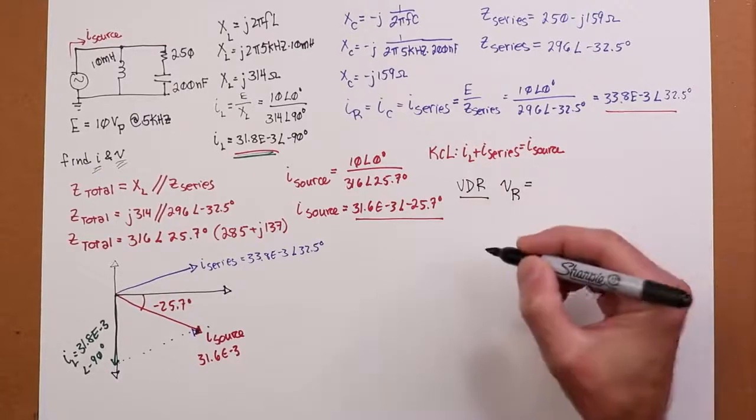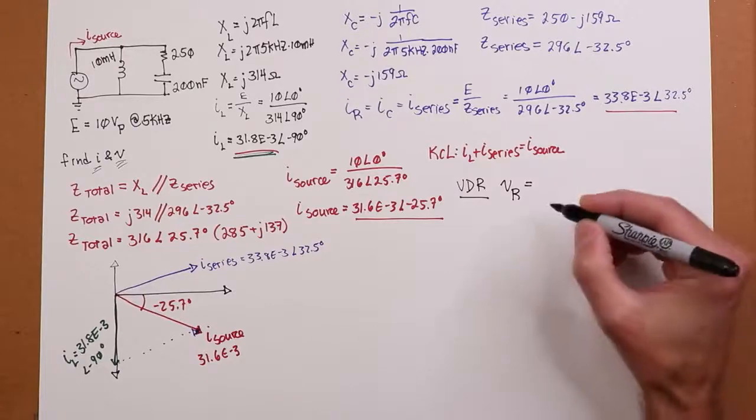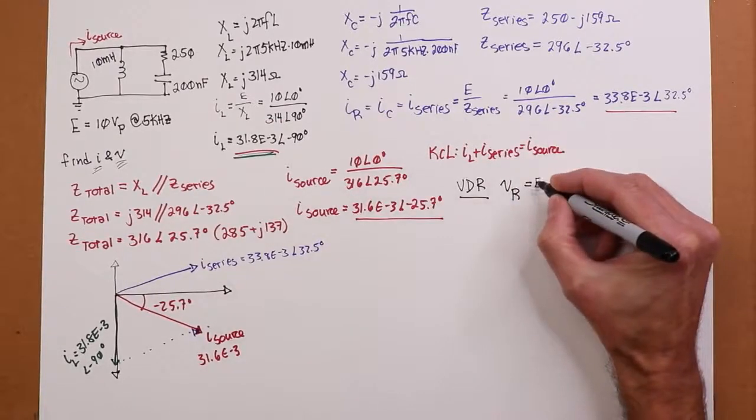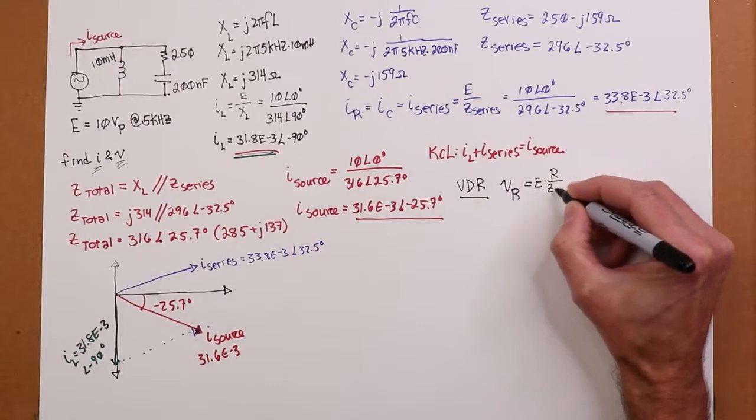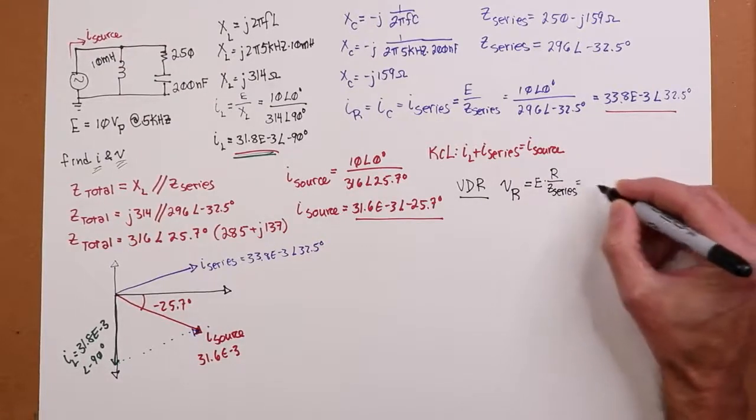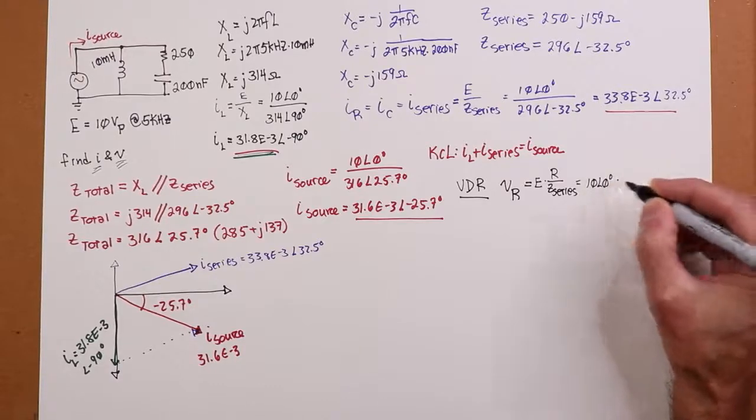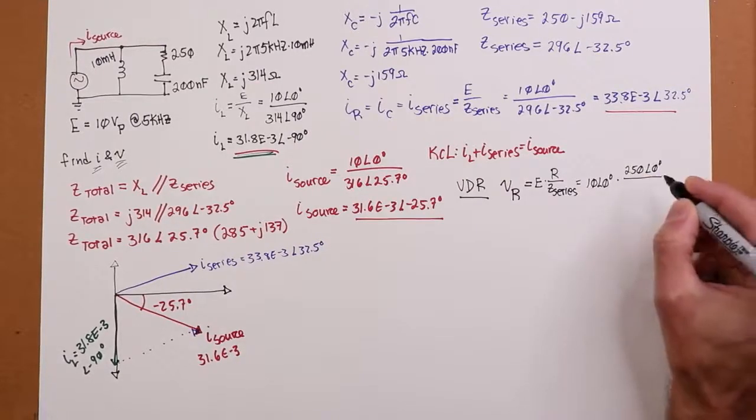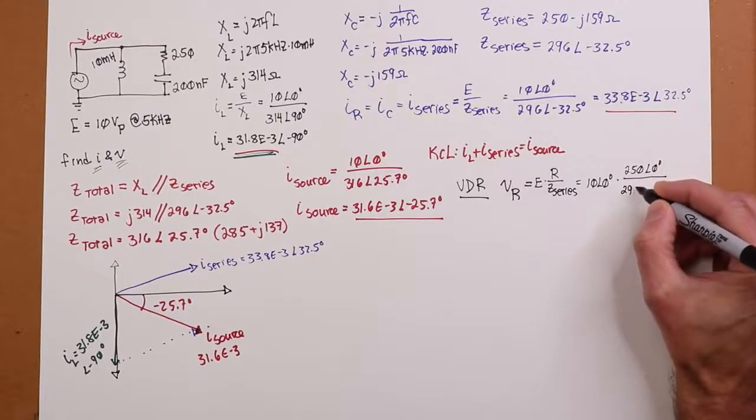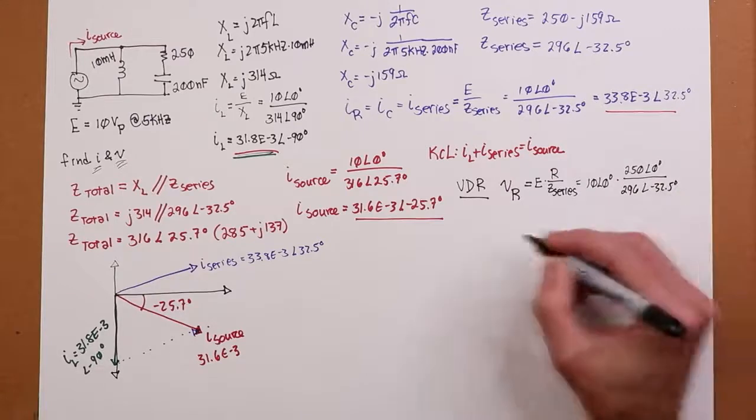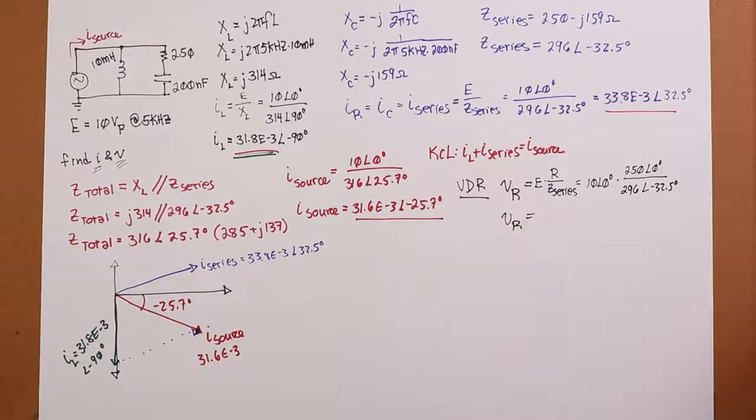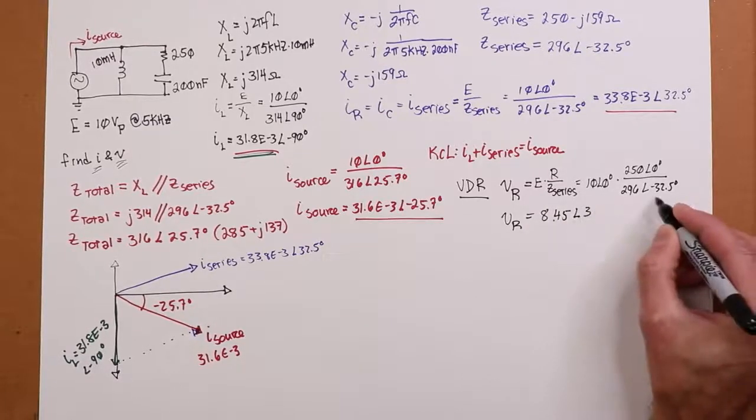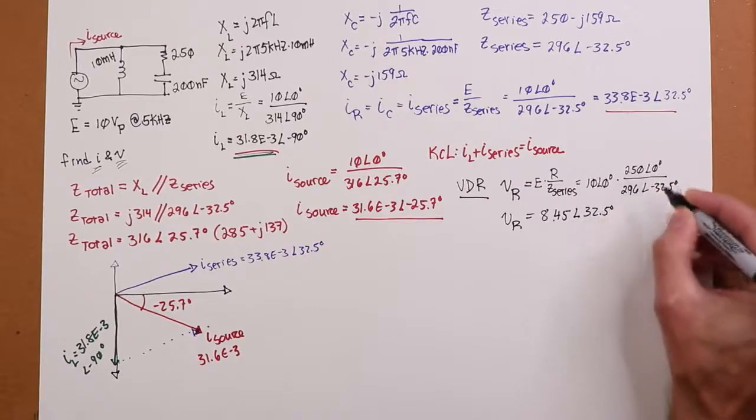Now, if we did our little head-to-tail thing here, like if I took this and moved it down here, then this point here should be our i source. Let's see if that makes sense. Well, that's supposed to be 31.6 mils. And that magnitude looks about right. All of these are low 30s. And then the angle here should be minus 25.7. And that looks pretty good, considering that we're just sort of sketching this. That's what it looks like.